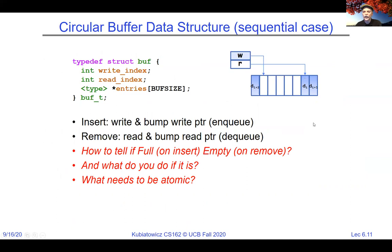Here's a circular buffer data structure where we have a write pointer and a read pointer. The read pointer points to the next thing to be read off the queue, and if you keep reading, you'll circularly wrap around. If the read pointer ever runs into the write pointer, it knows there's no data there. If the write pointer ever runs into the read pointer, it knows things are full. There's a buffer structure with two integers — a write index and a read index — and then an array of some type with buffer size entries. We ask: how do we know if it's full on insert or empty on remove, and what do we do? We need to put threads to sleep — put the producer or consumer to sleep — and we need to know what atomic operations we need.